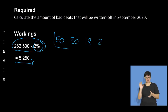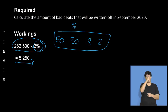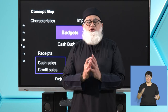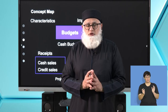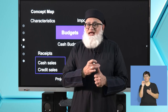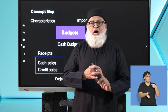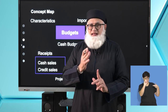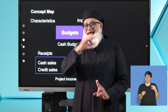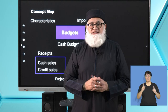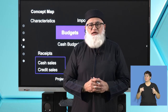In summary, when doing a debtors' collection schedule: the most important figure is your credit sales. Once you have your credit sales, look at the trend — what are the percentages? Then go back to your credit sales, calculate the percentages, and you have your answer. Let's take a quick break, refresh, and we'll see you in a jiffy.